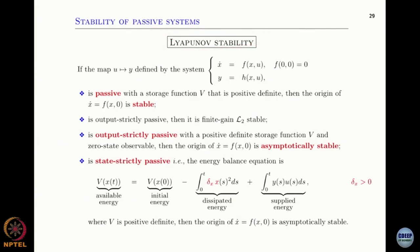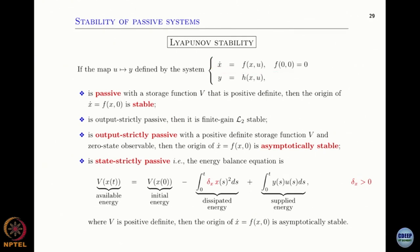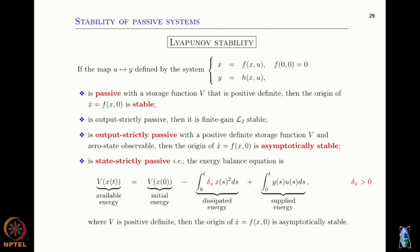How do we relate passivity to Lyapunov stability? Passivity is about inputs and outputs, but now we also consider the state of the system. If the system is passive with a storage function or energy function V that is positive definite, then the origin for this system — without inputs, since we are talking about Lyapunov stability — is stable.